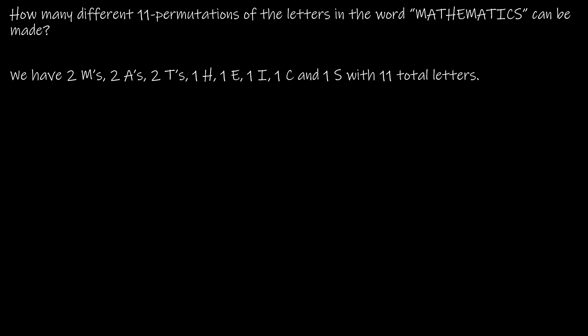First, we want to look at how many total letters there are, which is 11. So we have 11 total letters: two M's, two A's, two T's, and then one of everything else. Now, thinking step by step: I have 11 different locations. How many ways can I choose where the M's go? If there are 11 locations, I'm choosing two of them for M's, so that's 11 choose 2.